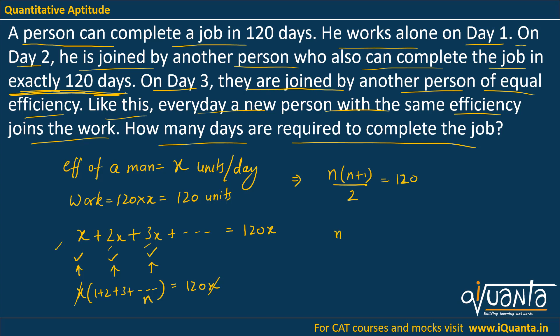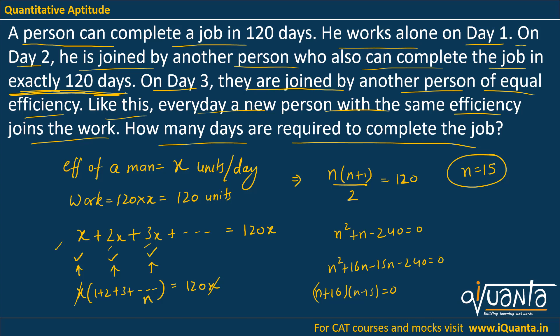Solving this we get n² + n − 240 = 0. Factoring: n² + 16n − 15n − 240 = 0, which gives us (n + 16)(n − 15) = 0. We take only the positive root because the number of days can never be negative. So n = −16 is ignored and n = 15 is the correct answer.